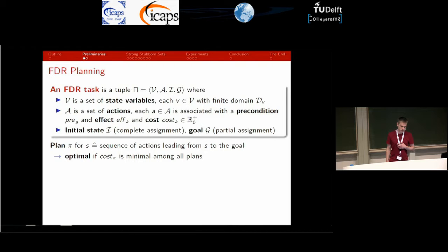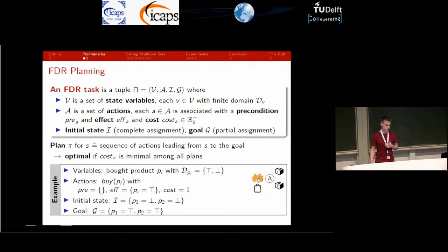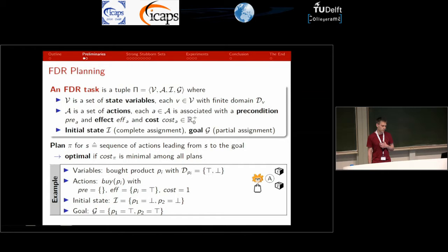I will conclude the talk with a couple of experiments on IPC benchmarks. We consider FDR planning as a basis. An FDR task is described in terms of a set of finite domain state variables, a set of actions, a single initial state, and a partially defined goal. Here's the running example I'm going to use throughout this talk. The overall goal of this task is to buy all products. The states are described in terms of two Boolean variables, one for each product indicating whether it has been bought or not. There is a buy action for each product which doesn't have any precondition and sets the corresponding variable to true.